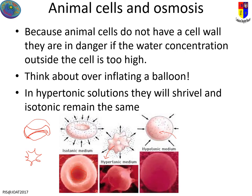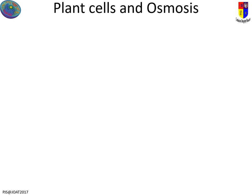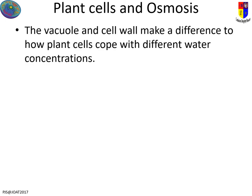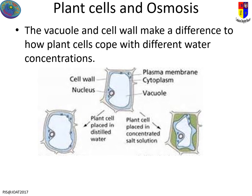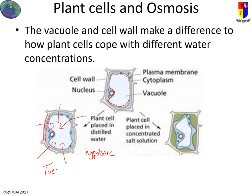Plant cells are different. They have a vacuole which helps control water balance, and they also have a cell wall which basically stops them bursting, so they cope much better than animal cells. Here's your normal cell with the vacuole in the middle storing cell sap, which is mainly water. If I put it into distilled water — pure water, so this is hypotonic — water starts flooding into the cell by osmosis. The vacuole gets bigger and pushes the cell membrane right out to the edge of the cell wall, which even bulges out a little, but the cell does not break. This is called a turgid cell.